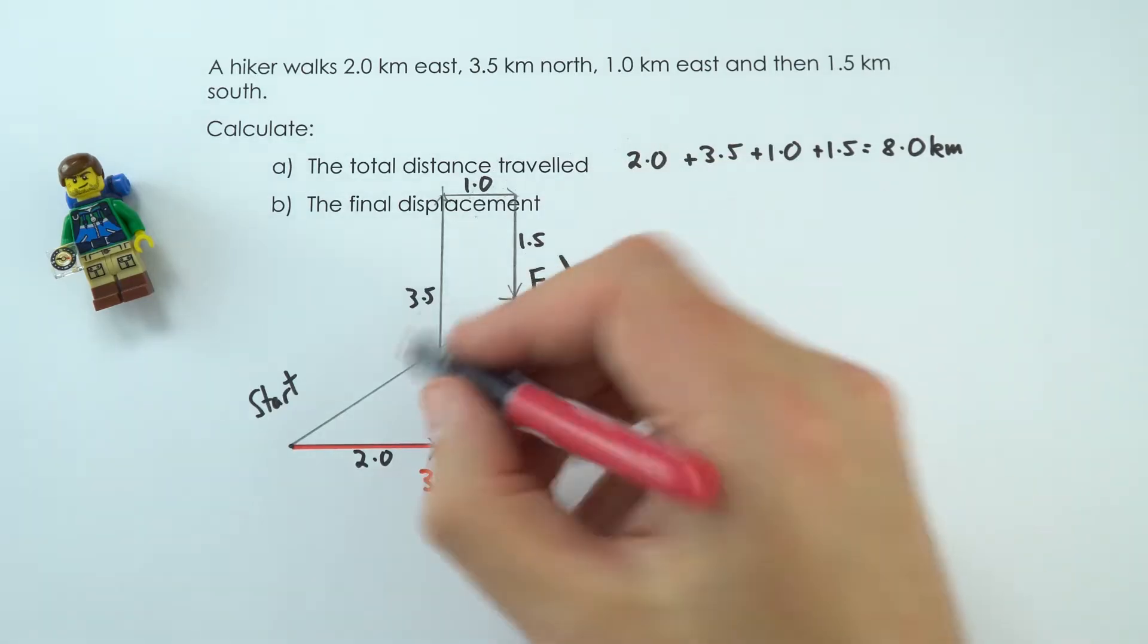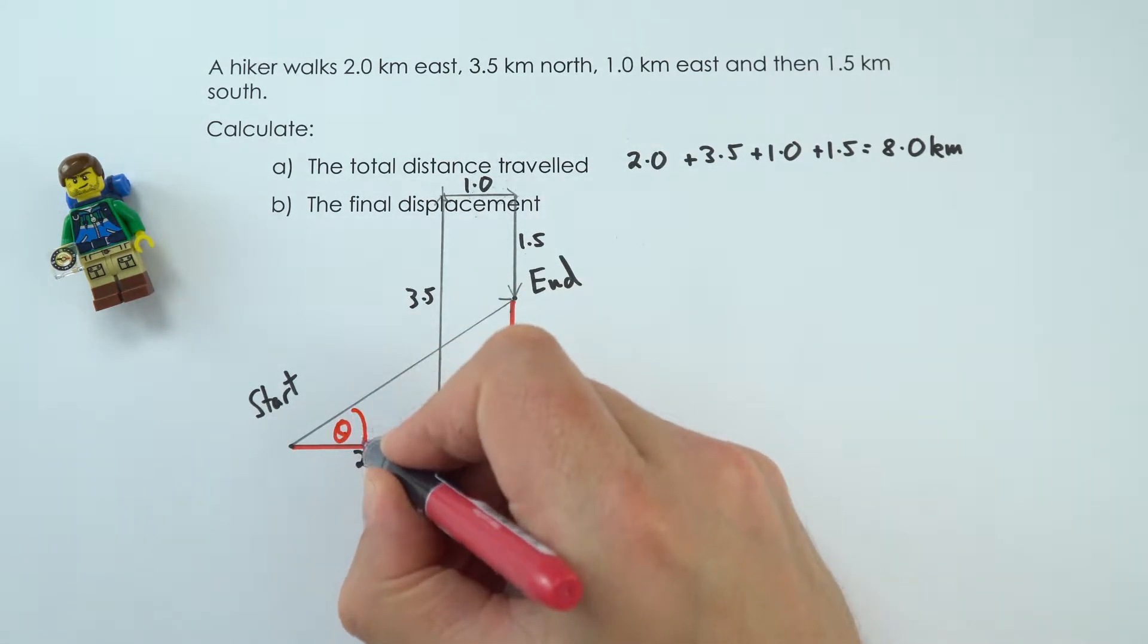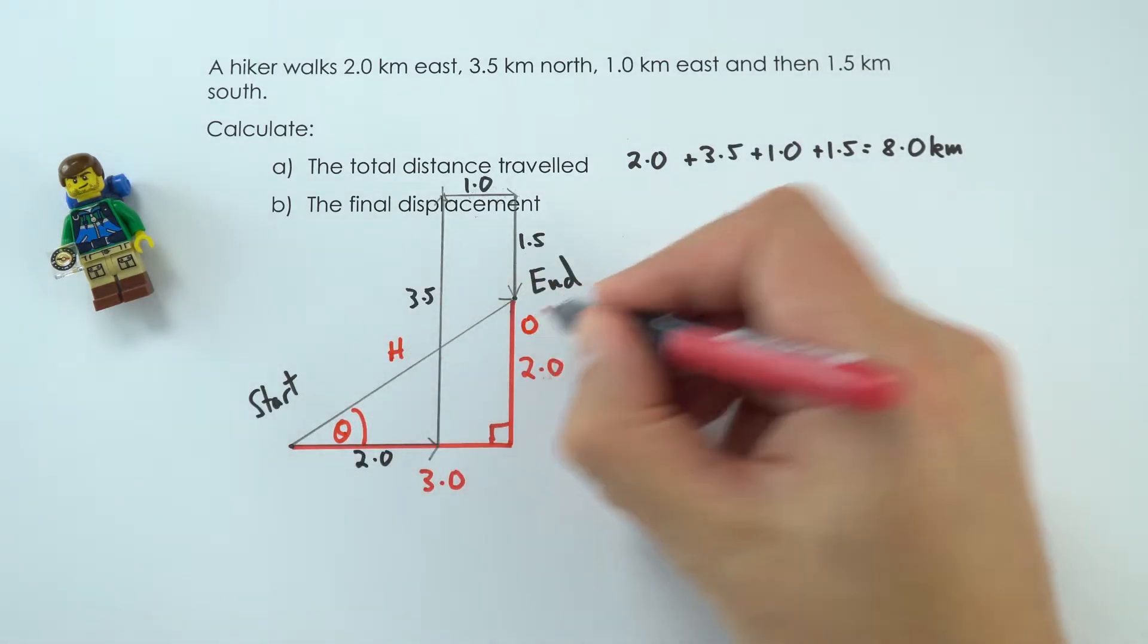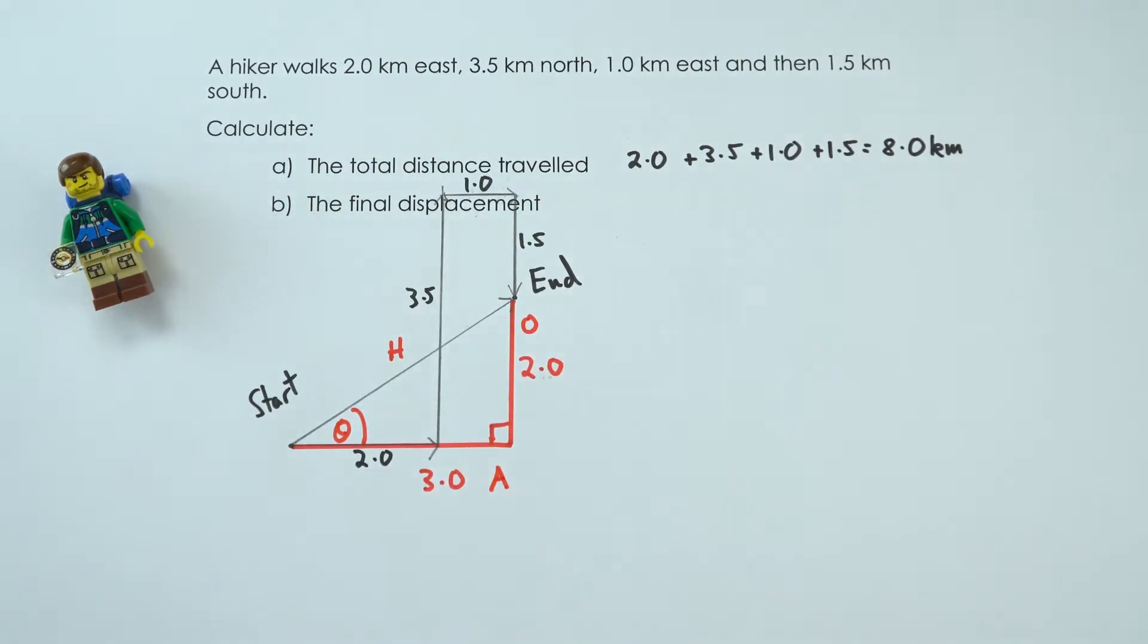I'm going to label on this the fact that we've got an angle, maybe theta in here. This is going to be my hypotenuse. This is going to be my opposite side and that's going to be my adjacent side. So that might come in useful later on.